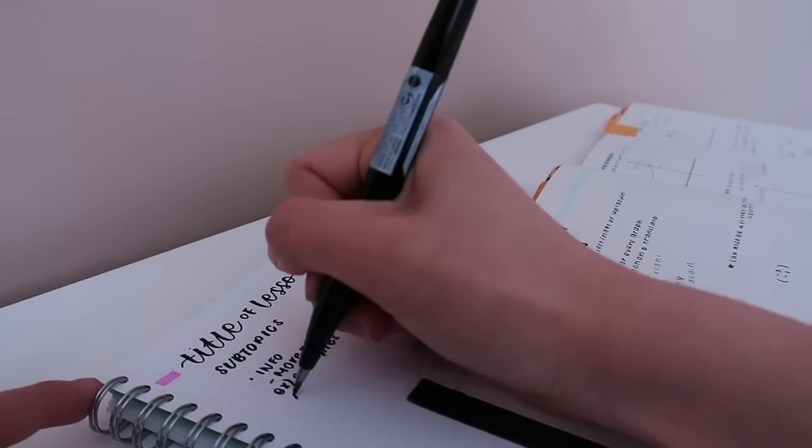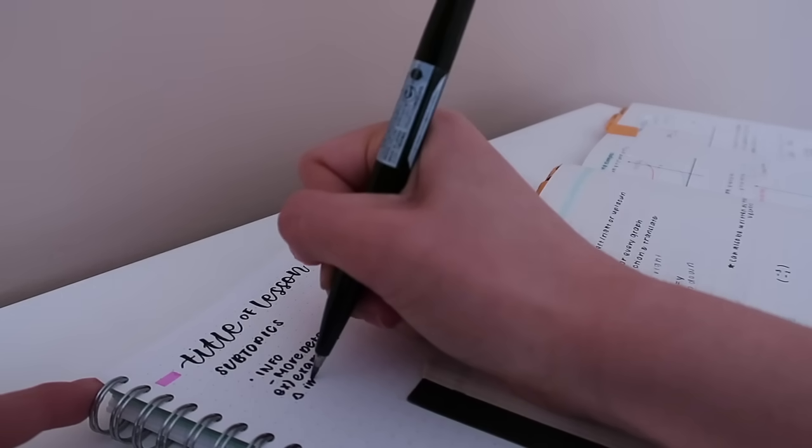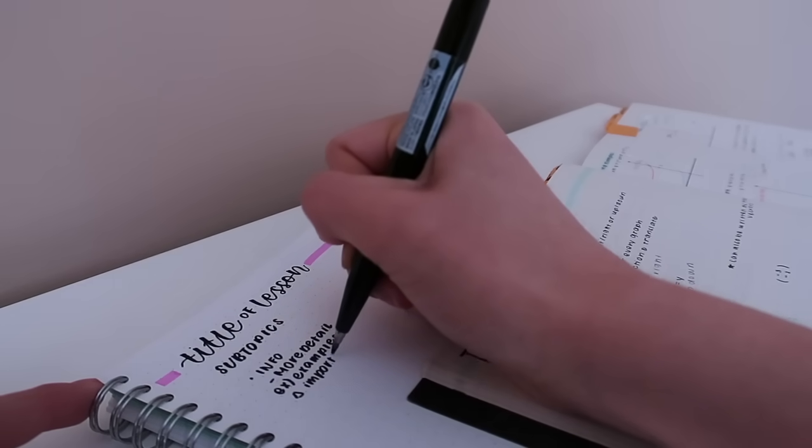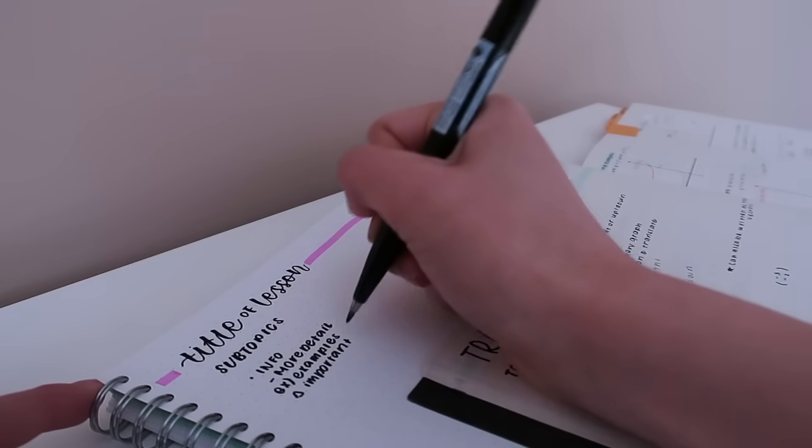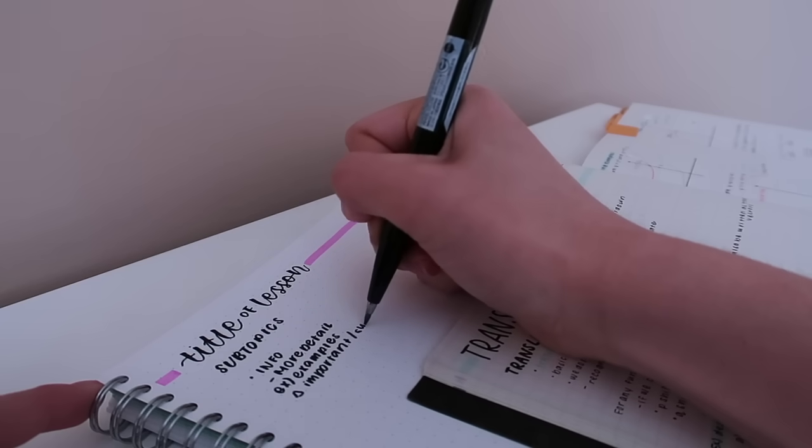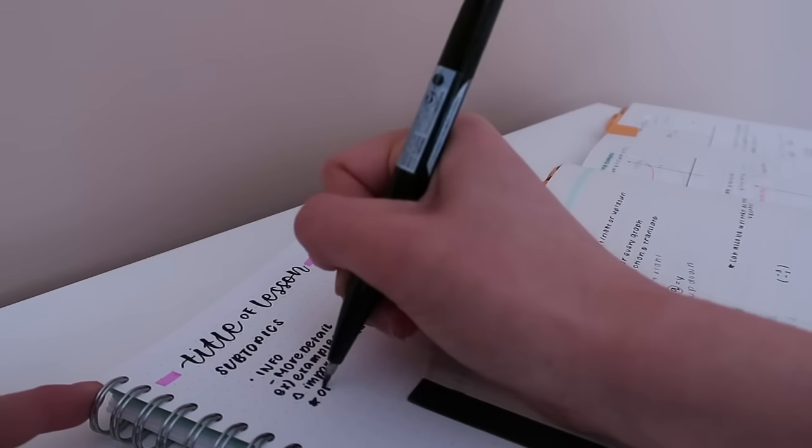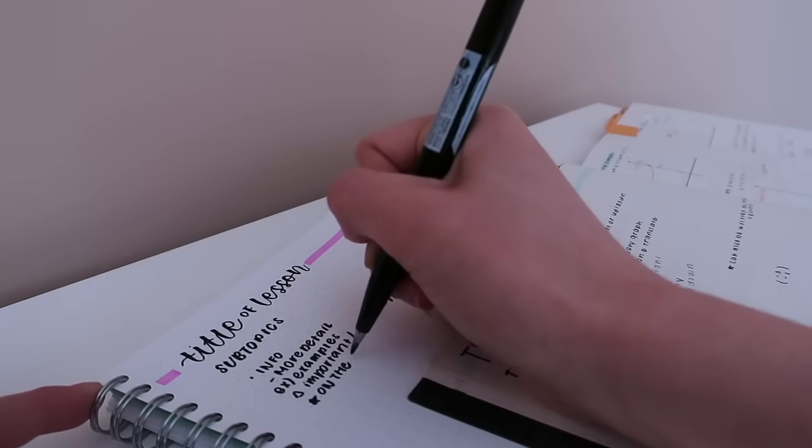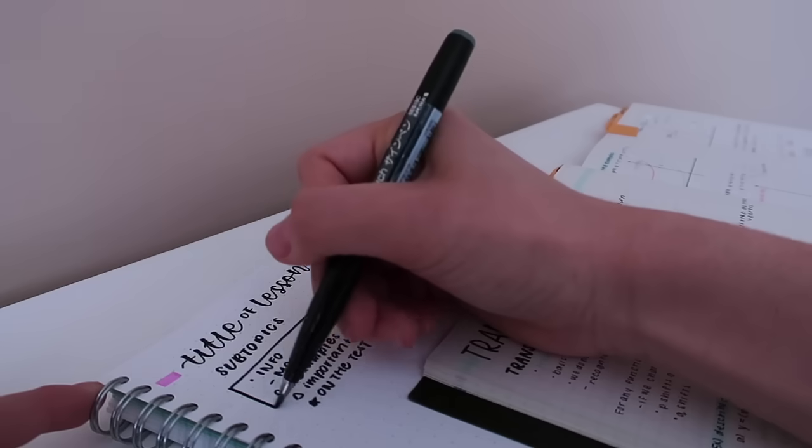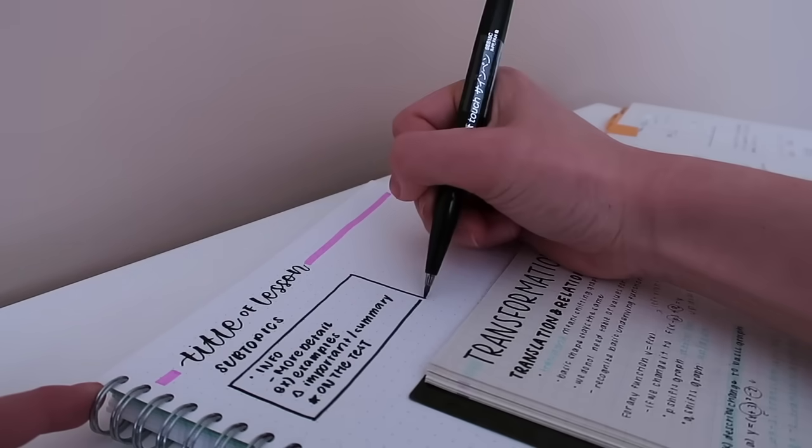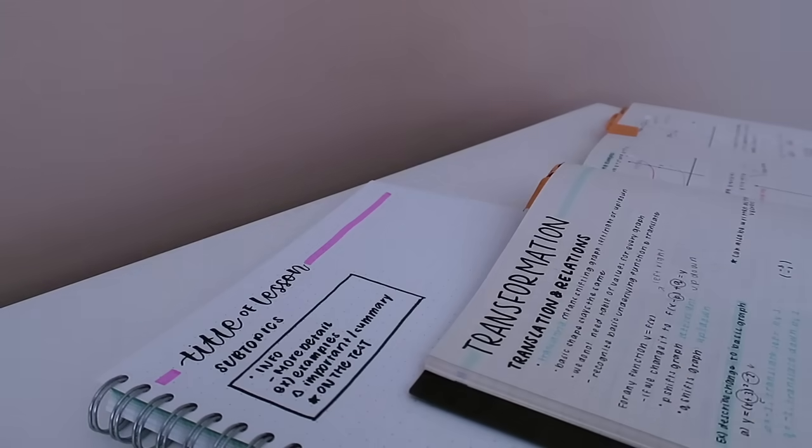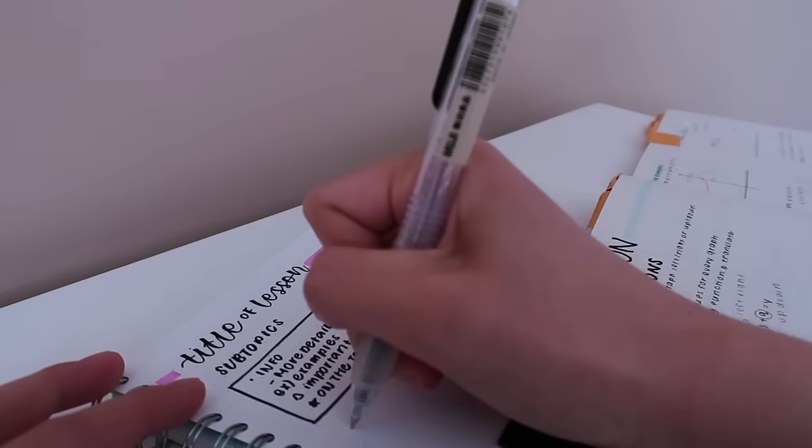Now for examples you see a lot of these in math more than you do in any other subject, so I just use EX with a little half of a bracket and then I'll just write down whatever examples. For math I also use a triangle to specify any important points that my teachers make or like mistakes not to make, then a star if they ever mention anything about this being on the test. I honestly try to keep my system very minimal so I can follow through it when I'm writing notes during the lecture.